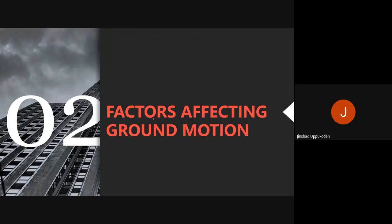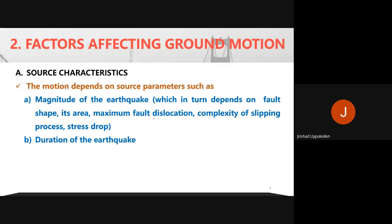The factors affecting ground motion: first, source characteristics — the magnitude of the earthquake, meaning how much energy is released, which depends on fault shape, area, dislocation, and stress drop. The motion at a site depends on both the magnitude and the duration of the earthquake, which are both source characteristics.